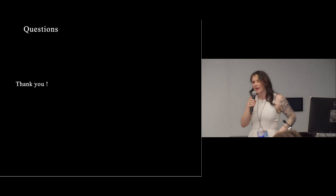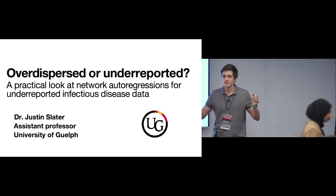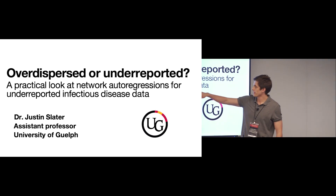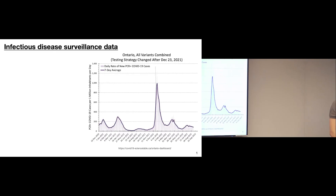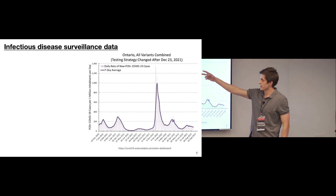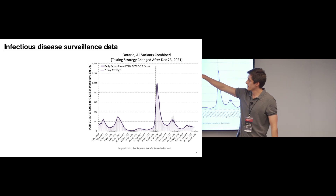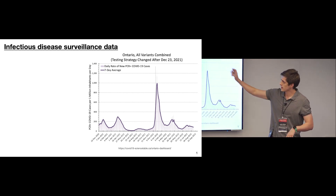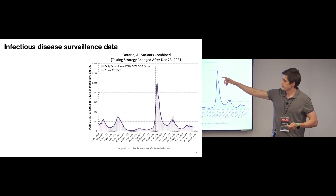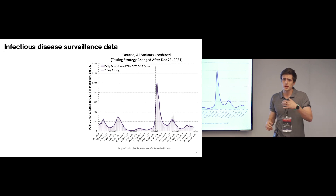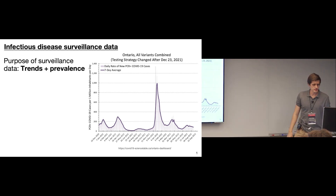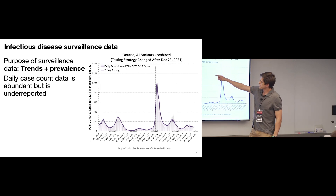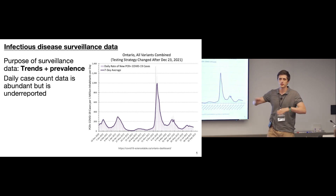Hi everyone. I'm Justin Slater, an assistant professor at the University of Guelph. I'm talking about a practical look at particular models for under-reported infectious disease surveillance data. The main purposes of collecting such data are: estimating trends — whether cases are rising or falling — and estimating prevalence, the fraction of the population with the disease. Daily case count data is the most abundant form of surveillance data, but it is subject to under-reporting and under-ascertainment.